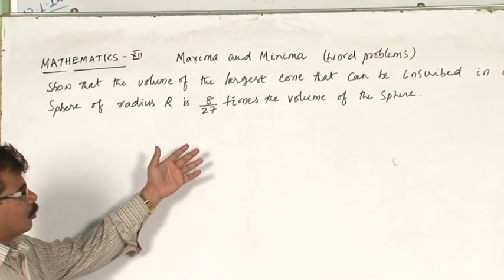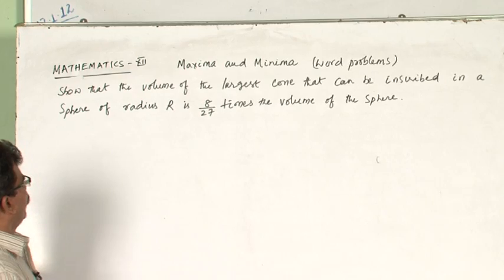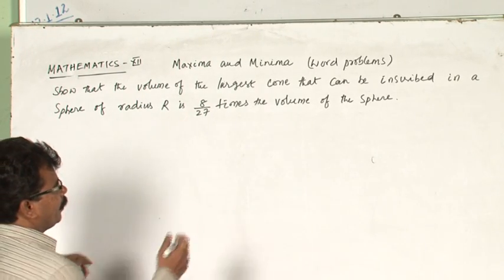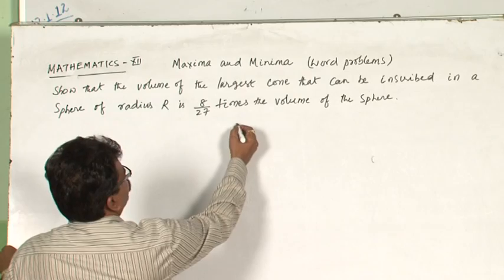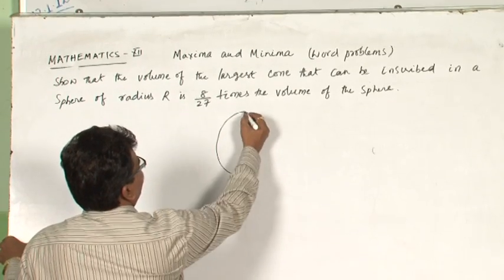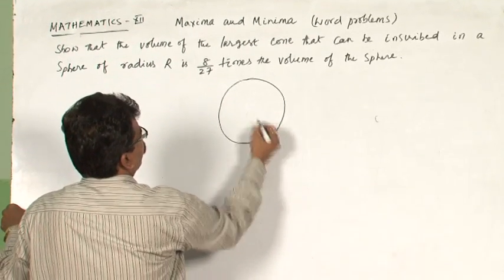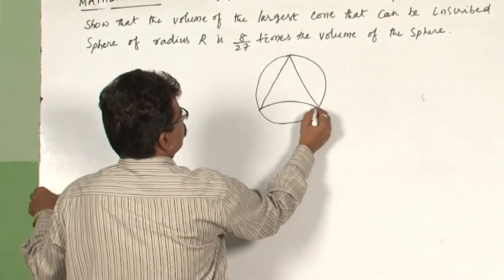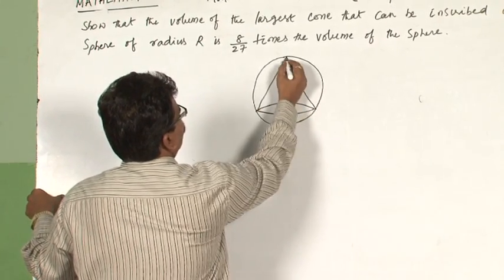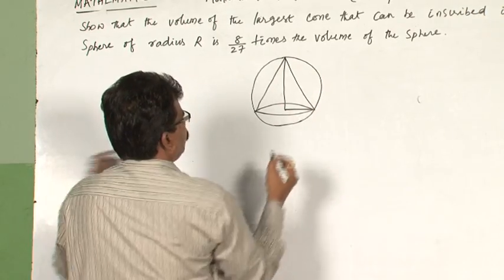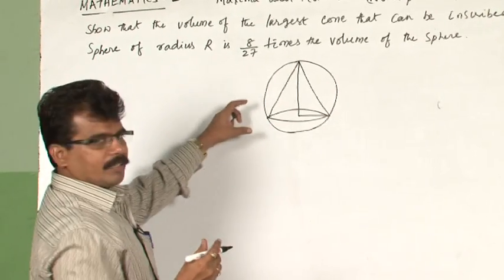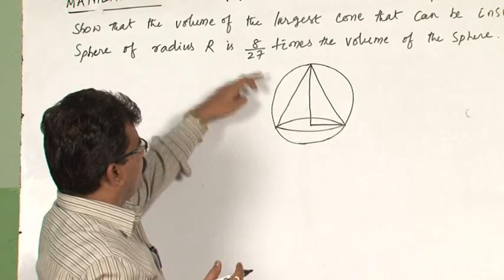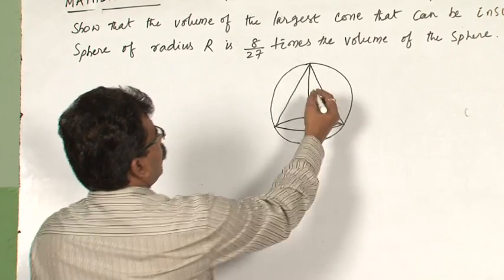Show that the volume of the largest cone that can be inscribed in a sphere of radius R is 8 by 27 of the volume of the sphere. That means, a sphere is given and we have to find the cone with maximum volume — what is the volume of the cone such that it is maximum — and also show that that volume is 8 by 27 of the volume of the sphere.